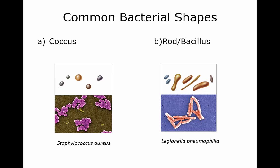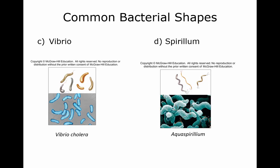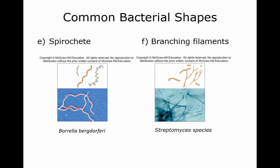Looking at examples: you can see the coccus — that's Staphylococcus aureus. The rod or bacillus shape is Legionella pneumophila on the right. Vibrio is the curved rod — that's Vibrio cholerae, you can see it's curved. Aquaspirillum shows the more helical or spiral shape. The spirochete has more of a corkscrew-looking shape. And the branching filaments, where it's got branches off of it, that's the Streptomyces species.